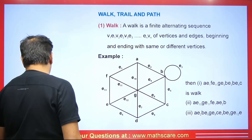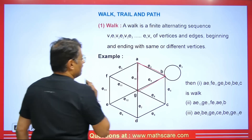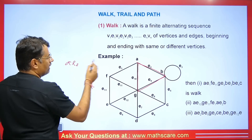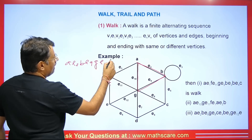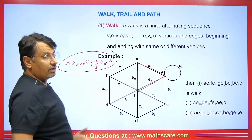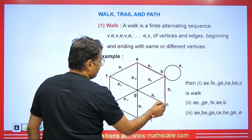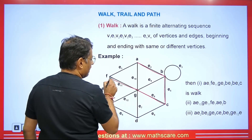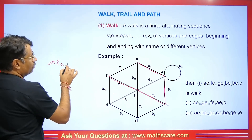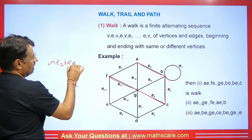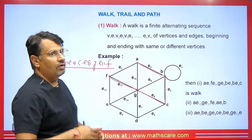Let me show you what a walk looks like. Imagine you start from here, go here, go here, and then go here. For example: A, E2, B, E9, G, E10, A — that is a walk. Another example: A, E2, B, E4, C, E8, G, E11, F. So that is also a walk. I have given some other examples you can understand from the diagram.